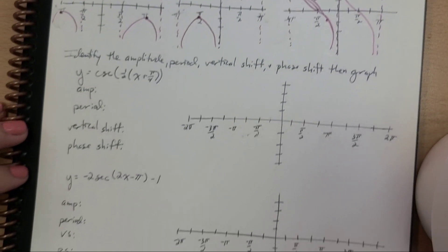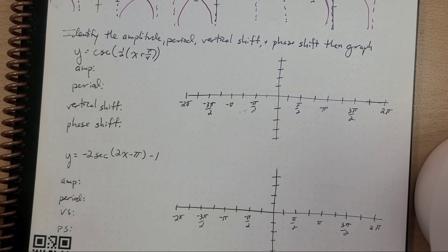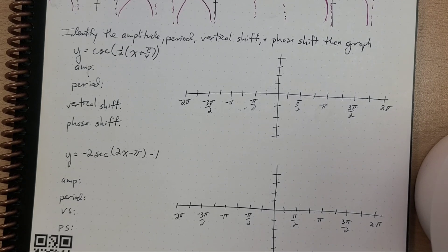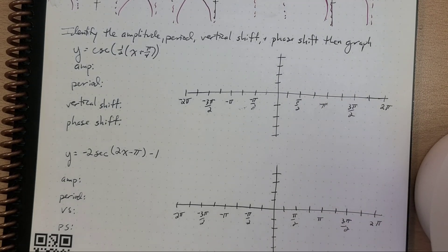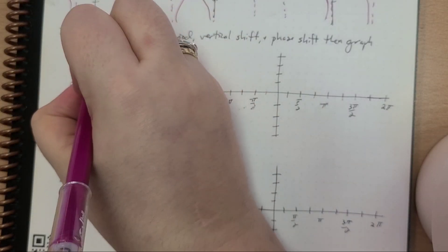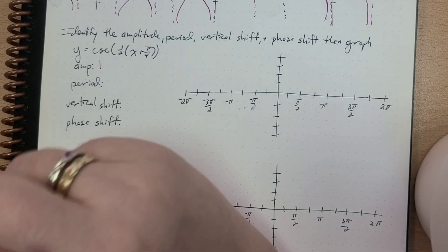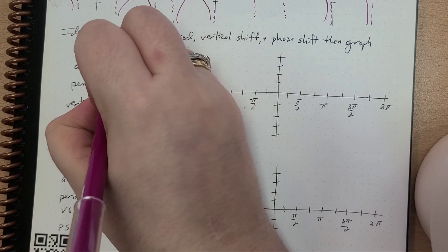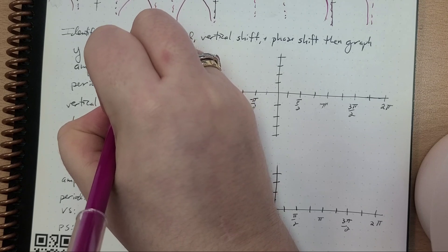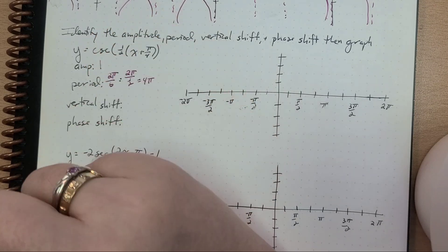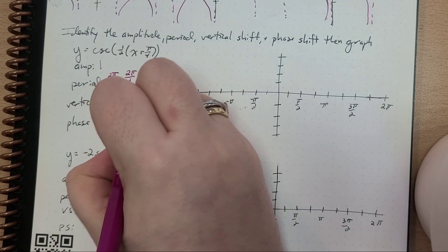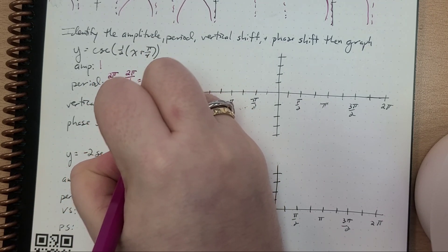Okay, not a great drawing, but hopefully you get it. So here we're asked to identify the amplitude, period, vertical shift, phase shift, and then graph y equals cosecant of (½x + π/4). So our amplitude here is 1. Our period is 2π over b, which is equal to 2π over ½, which is just 4π. Our vertical shift we have none, and our phase shift we're going left π/4.